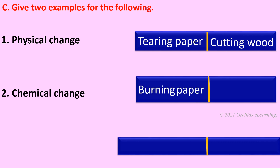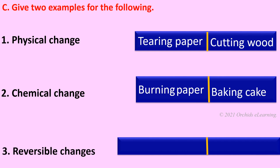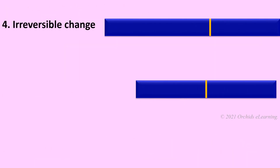Burning paper and baking cake. Chemical change — reversible changes: boiling water and melting. Irreversible change: ripening of banana and curdled milk.